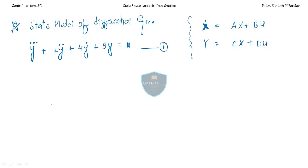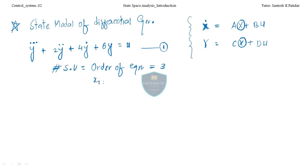In the last lecture itself, we have seen that the number of state variables is nothing but the order of the equation. What is the order here? It is 3. So the maximum number of state variables in the state model for this particular differential equation is 3. The state variables are x1, x2, and x3.